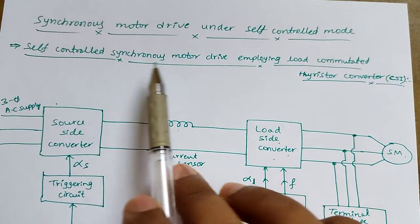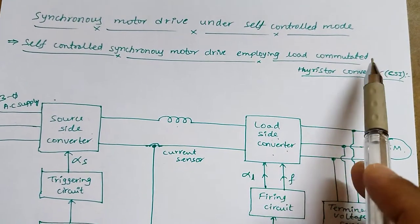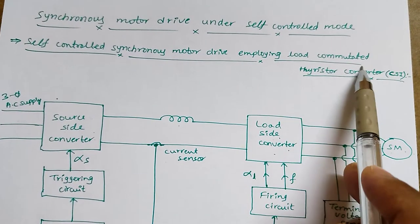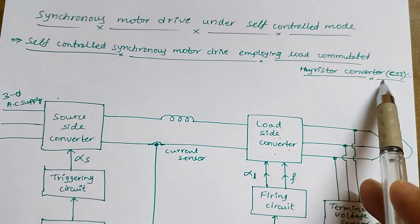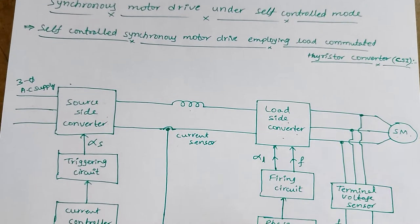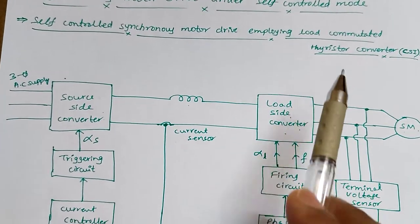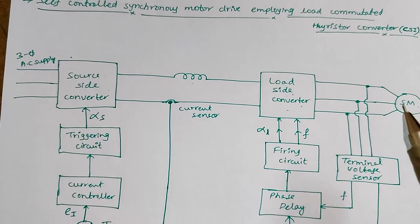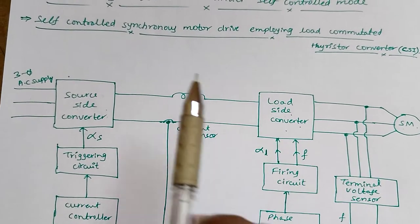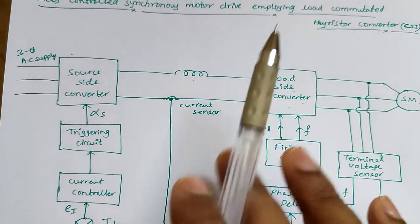The self-controlled synchronous motor drive employs the load commutated thyristor converter, which is called the current source inverter (CSI). In this closed loop mode, we need to take both speed as well as current as feedback. We will now see the power circuit diagram.